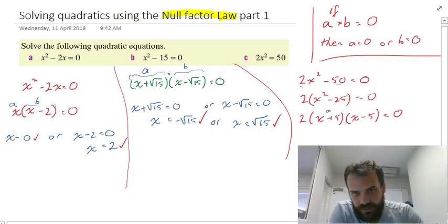That means that either x + 5 equals zero, or x - 5 equals zero. So x + 5 = 0 or x - 5 = 0, giving us x = -5 or x = 5. Two answers.